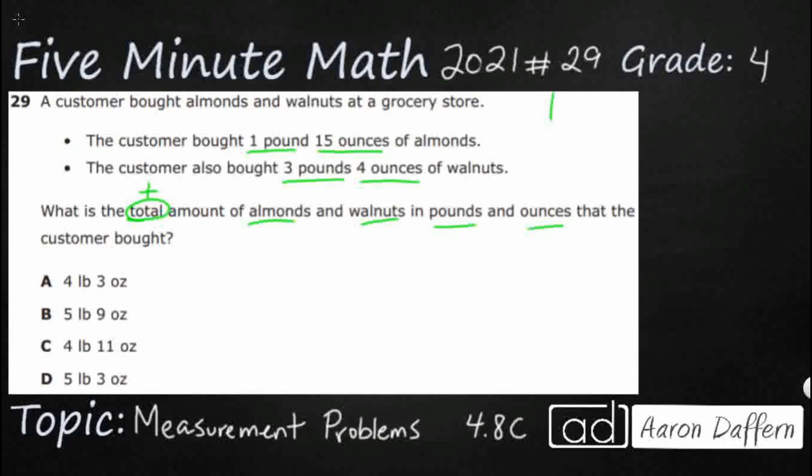So, 1 pound, I'll use the abbreviation here, 1 LB, and then 15 ounces, 15 OZ. All right, let's add that up. Let's see if we could just do it like this. 3 pounds, 4 ounces. It seems pretty easy, but let's try it.